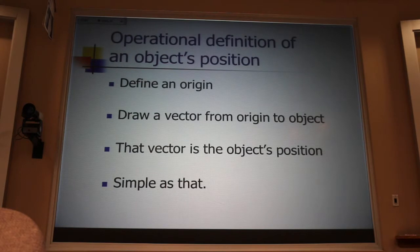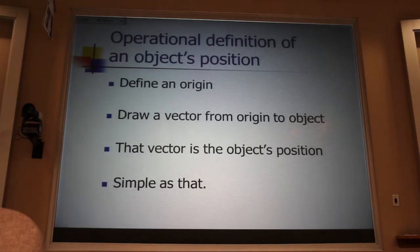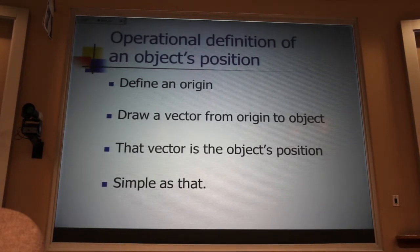Now, here's the operational definition. You define an origin, draw a vector from the origin to the object. That's it. That's all there is. It's not hard.